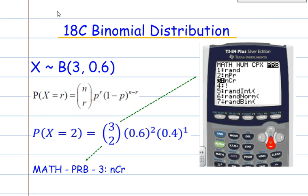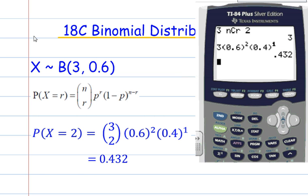So we can then put the rest of it into our calculator. So we can have 3, bracket 0.6 squared, 0.4 to the power of 1, which I don't need, but just for the example. And that gives me 0.432.